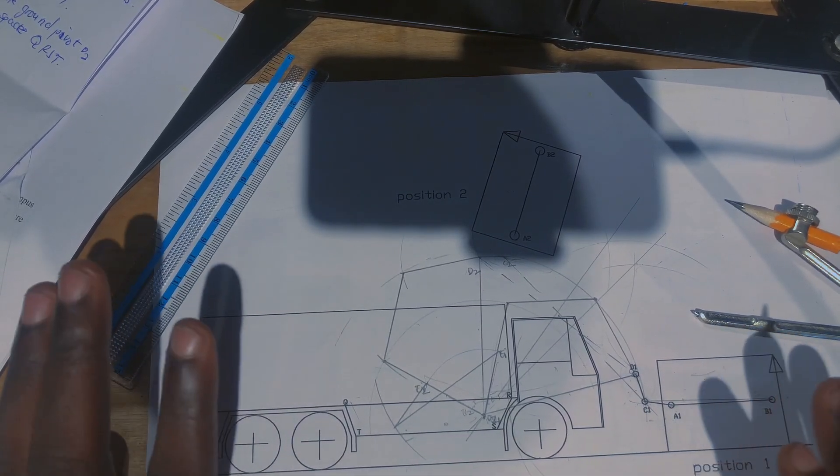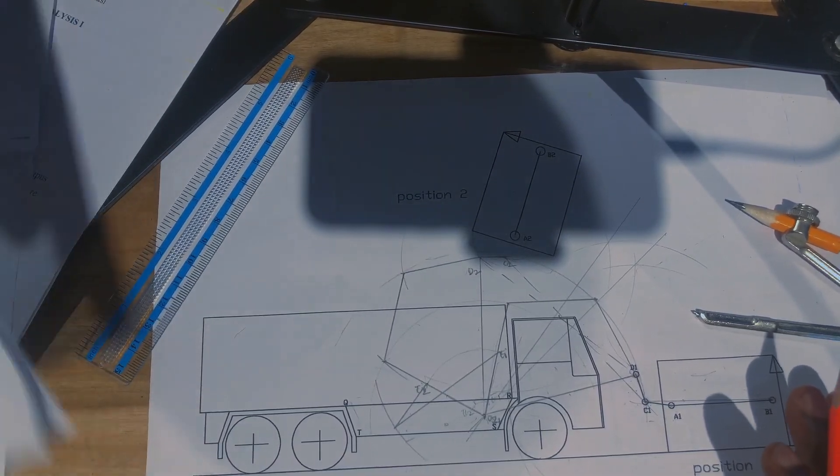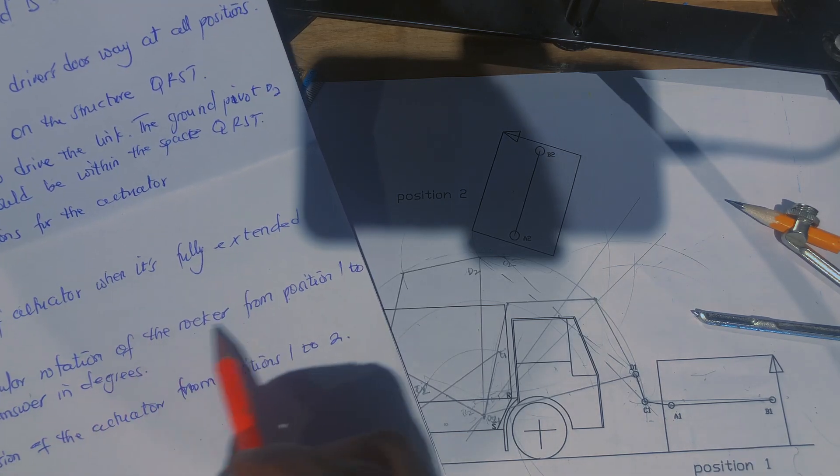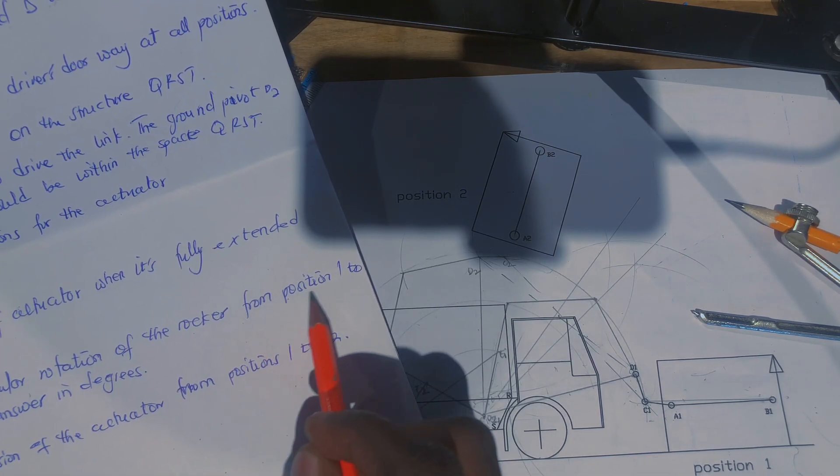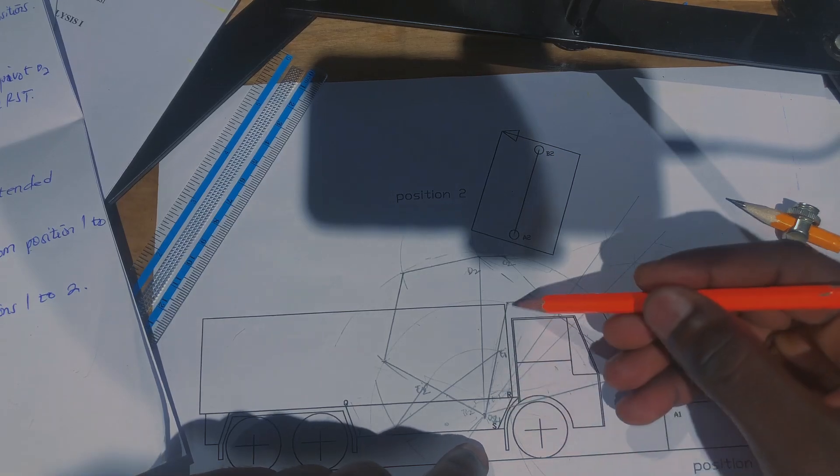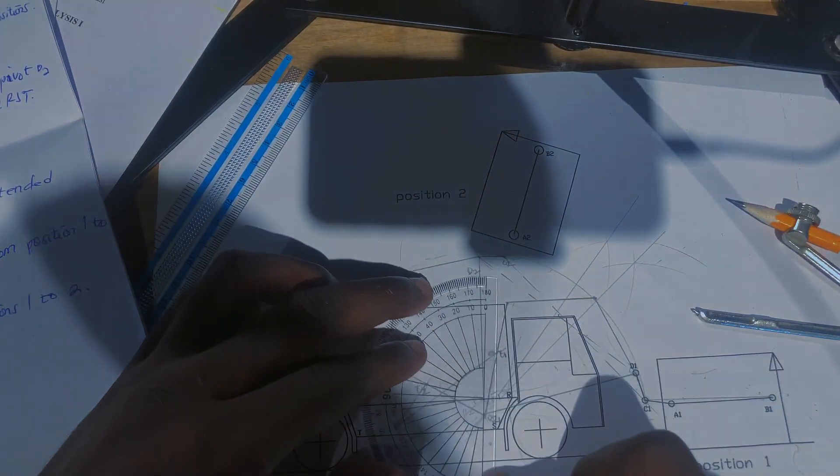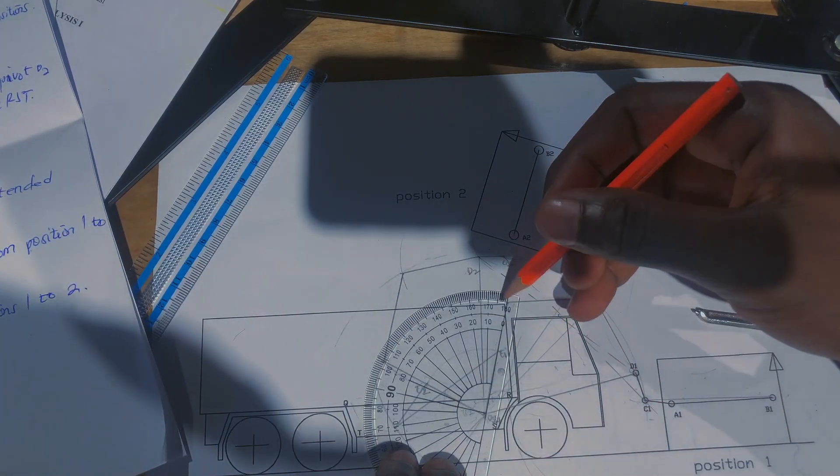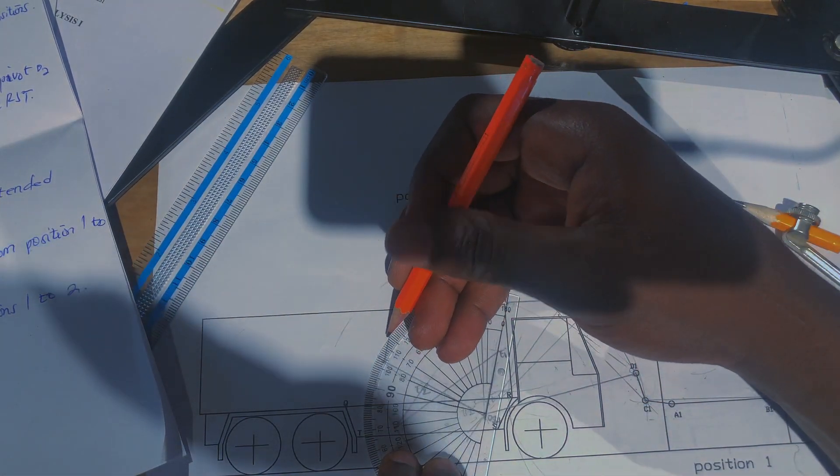The next one was to find and measure the angular rotation of the rocker from position one to position two. So I just want this and this, so I'll put my protractor here. Zero from here, so I have like 86, no 76.